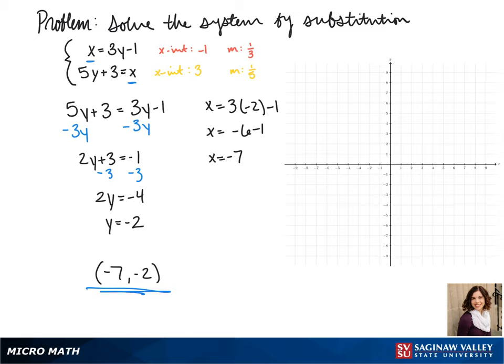So for our first equation, our x-intercept is negative 1, and our slope is 1 third. So there's our first line.